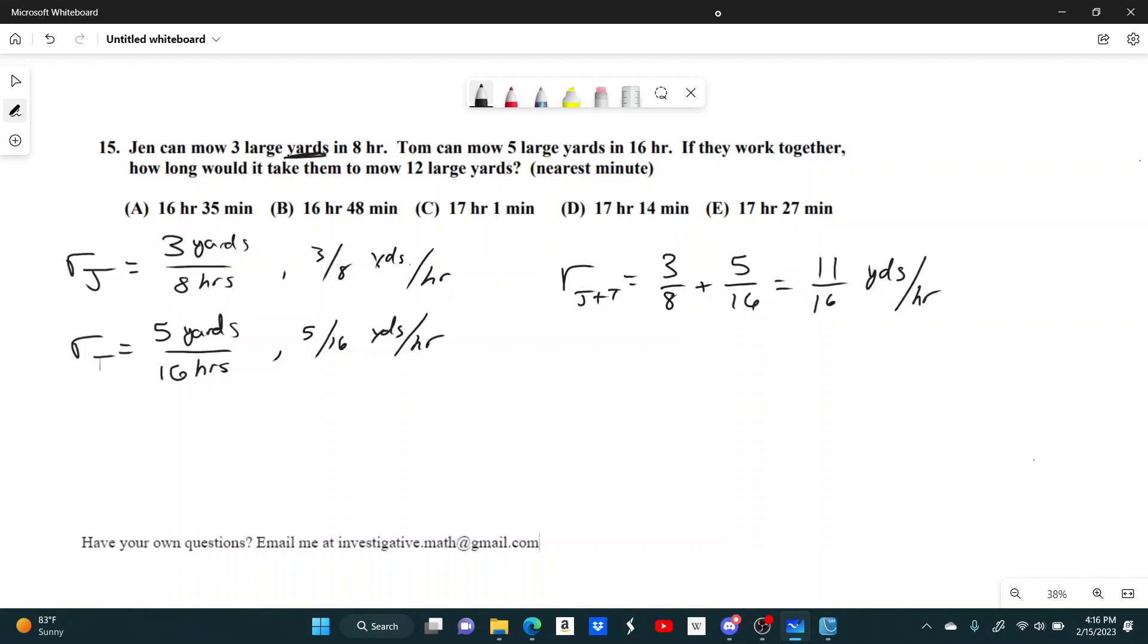And then what does it want to know? How long will it take them to mow 12 large yards? Well, they can mow 11 sixteenths of a yard in an hour. So how long will it take them to mow 12 yards? You can use a variation of distance equals rate times time, or yards equals yards per hour times hours.